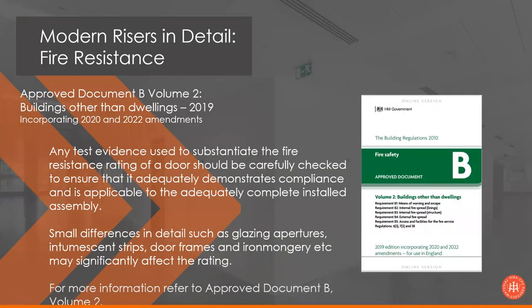Within Approved Document B, Volume 2 of the Building Regulations, it states that any test evidence used to substantiate the fire resistance rating should be carefully checked to ensure it adequately demonstrates compliance and applies to the complete installed assembly. Small differences — such as glazing apertures, intumescent strips, door frames and ironmongery — may significantly affect the rating. For example, a product certified only with a 300 by 300mm aperture would not cover a project requiring a 1200 by 200mm aperture. Changes from what has been tested can massively affect fire performance.